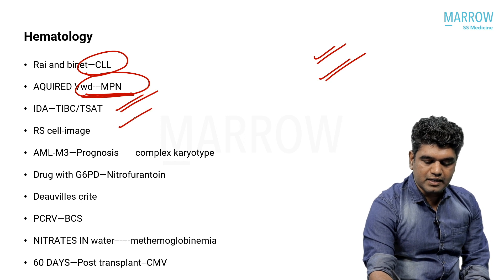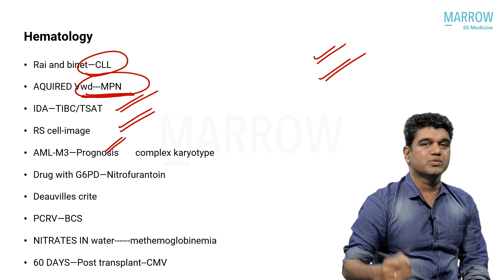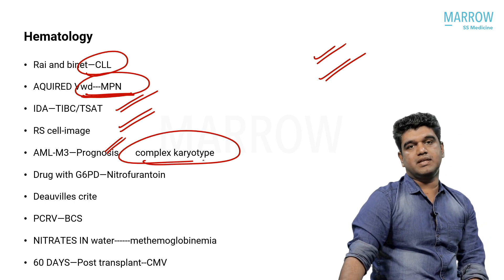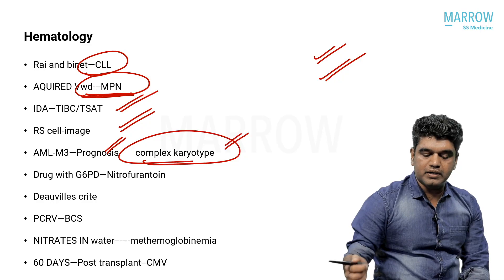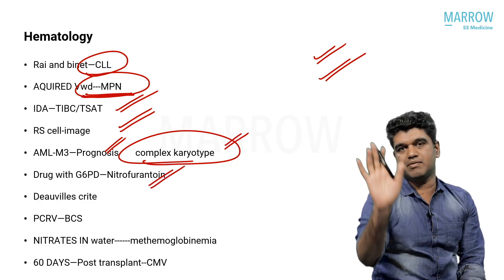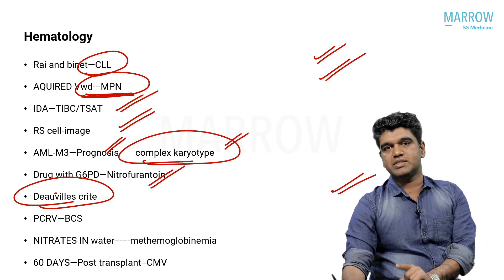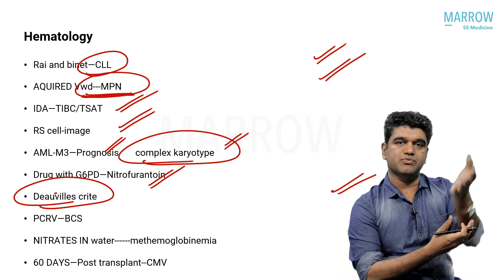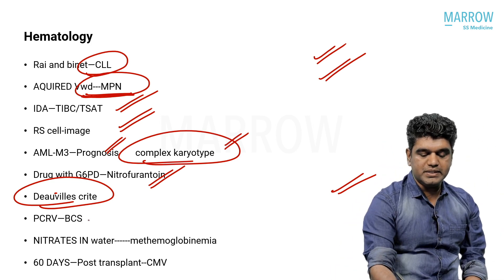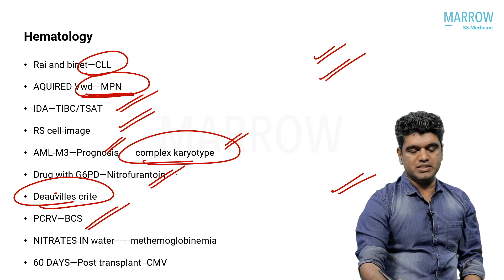Reed-Sternberg cell image — very easy question. AML M3 has good prognosis — everybody knows that. Bad prognostic features in AML: complex karyotype. Good prognosis markers: t(8;21), t(16;16), inversion 16, NPM1 mutation without FLT3, and CBF mutations. Everything else is bad prognosis. Drug with G6PD deficiency — nitrofurantoin — basic PG-level knowledge is enough. Deauville criteria for PET — watch the hematology video for that.